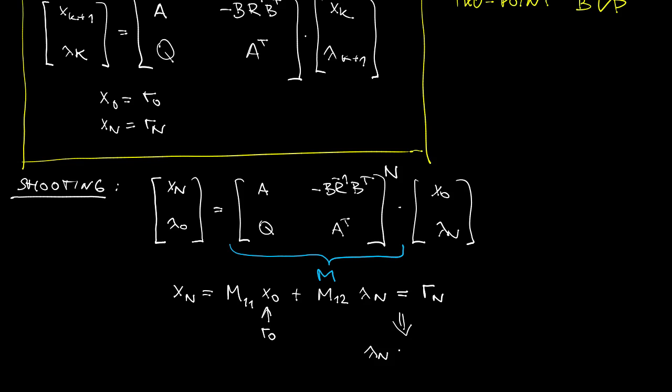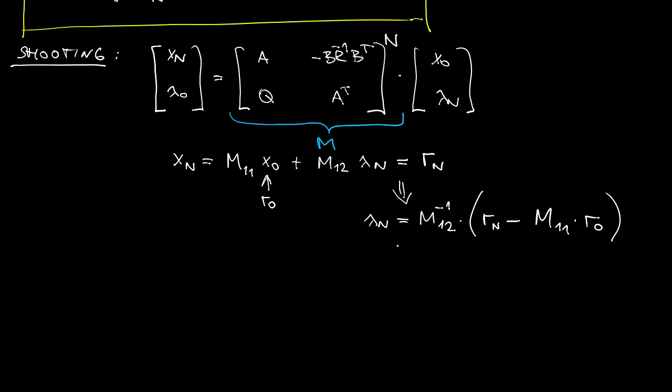And for a given state at the beginning and given state at the end, I can find an explicit expression for the missing lambda, lambda_n. Now, once I get lambda at the end, I can determine lambda at any point in the interval. And therefore, I can determine the control signal anywhere in the control interval.